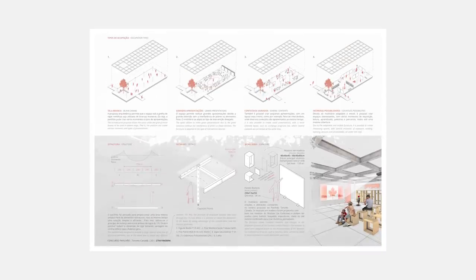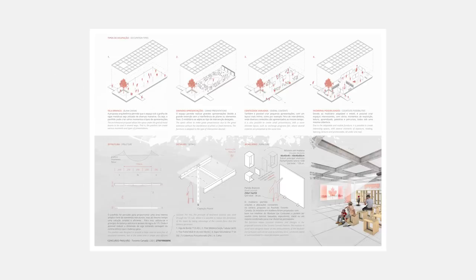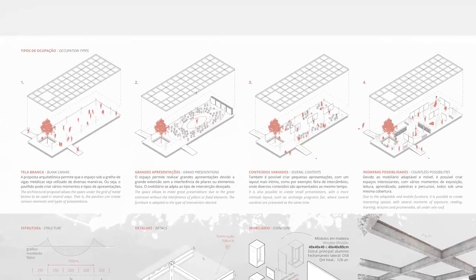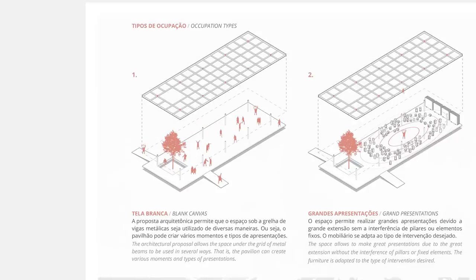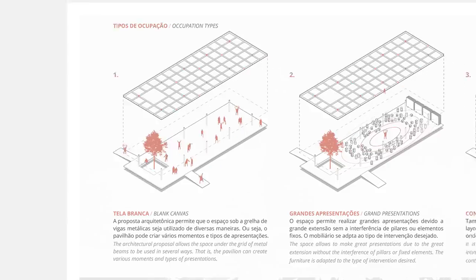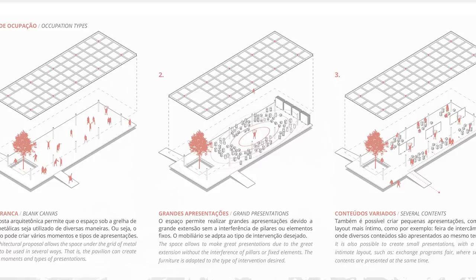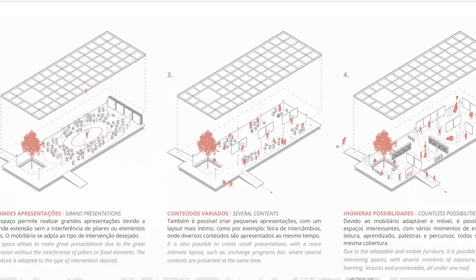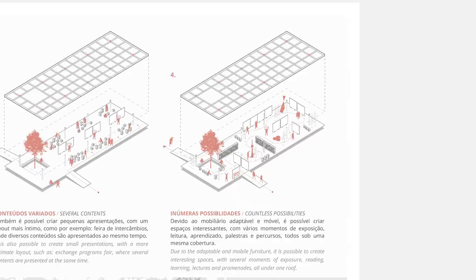Now onto the second board. I divided the canvas into two parts: the top one to talk more about the space flexibility, and the bottom one for structural and overall details. These technicalities weren't required by the competition briefing, but I wanted to show a deeper understanding of what I was proposing. Starting over the top: four diagrams. The first being about how open and free this space could be — it would serve as a sheltered public space for recreation when the exhibition wasn't taking place, named 'blank canvas,' available for any sort of action. Second diagram illustrating how a grand presentation could take place: using the wooden modules, you could organize the space into an oval lecture. Then the third with small presentations and the fourth combining multiple options — using the blank panels and wooden modules to create an interesting route with various moments of exposition, reading and learning.